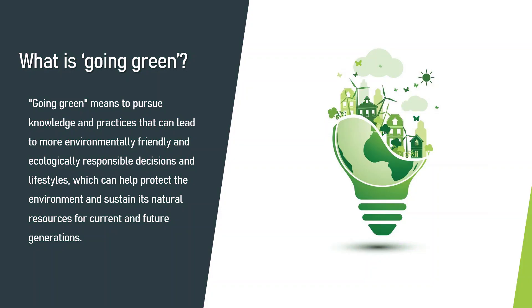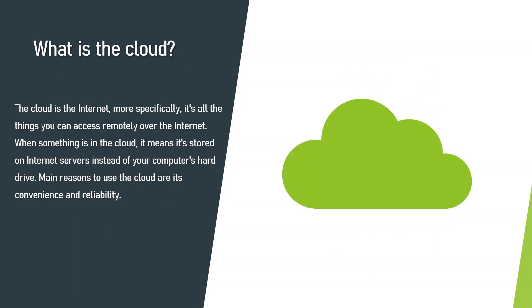Now let's see what is cloud. Cloud is the internet — more specifically, it is all the things you can access remotely over the internet. Rather than keeping files in a hard drive or local storage device in a physical manner, cloud-based storage makes it possible to save them in a virtual and far-off database. As long as our electronic device has access to the internet, it can access the data and all the software programs to run it. For example, if you have ever used a web-based email service such as Gmail or Yahoo Mail, you have already used cloud. All of the emails in a web-based service are stored on servers rather than on your computer's hard drive, which means you can access your emails from any computer with an internet connection.